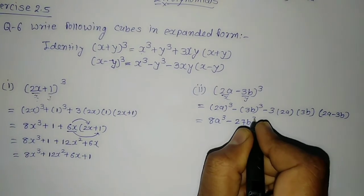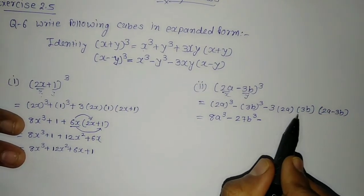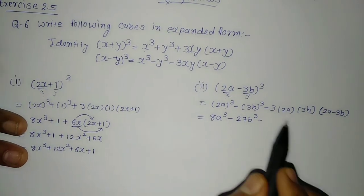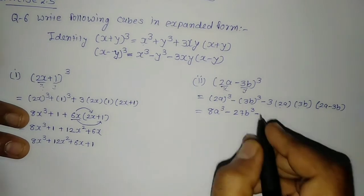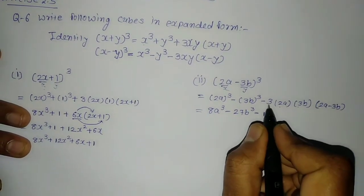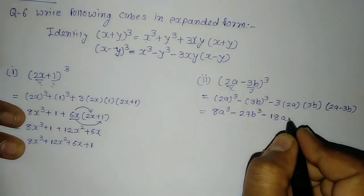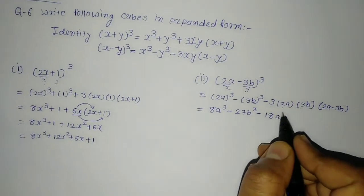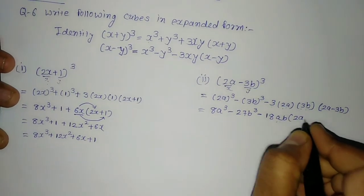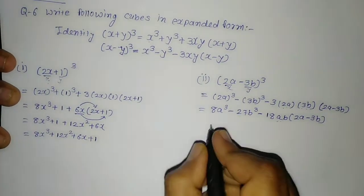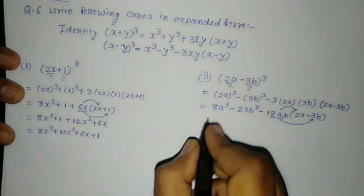Continuing: minus 27b cube, then minus 3 times 2a times 3b times bracket (2a − 3b). The coefficient: 3 times 2 is 6, times 3 is 18. The sign outside is minus, so we have minus 18ab times bracket (2a − 3b). Now multiplying: minus 18ab times 2a gives minus 36a squared b (minus times plus is minus). Then minus 18ab times minus 3b gives plus 54ab squared (minus times minus is plus).